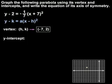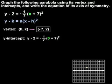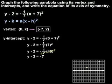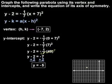Next, to find the y-intercept of the parabola, we're looking for the point where it crosses the y-axis. Any point on the y-axis has an x-coordinate of 0. So to find the y-intercept, we plug 0 into our equation for x, and we have y minus 2 equals negative one-seventh times parentheses 0 plus 7 squared. Simplifying: y minus 2 equals negative one-seventh times 49, which is negative 7. Adding 2 to both sides, y equals negative 5. So the y-intercept is the point 5 units down on the y-axis.